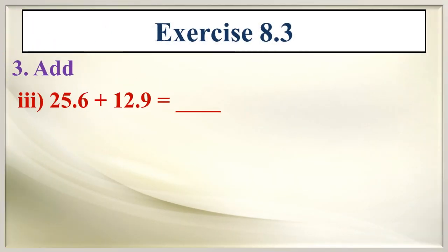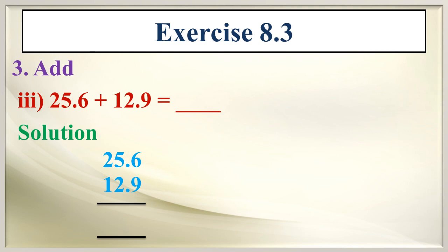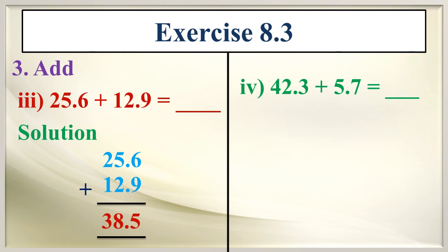Third: add 25.6 plus 12.9 equals dash. Now we are going to write the given decimal in vertical position: 25.6 and 12.9. Now add these two decimals. What is the answer? That is 38.5.